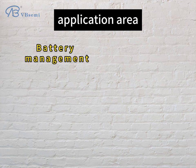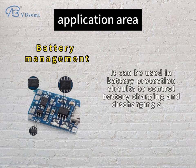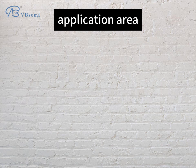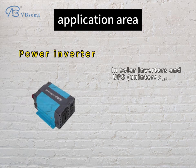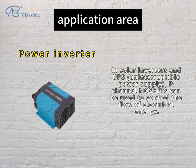Battery management: it can be used in battery protection circuits to control battery charging and discharging and prevent over-discharge. Power inverter: in solar inverters and UPS uninterruptible power supplies, P-Channel MOSFETs can be used to control the flow of electrical energy.